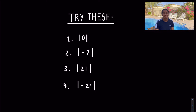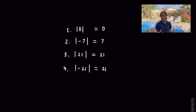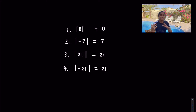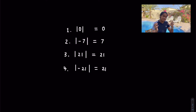Pause the video and try these practice questions using what we've learned. Now let's do them together. The first one is the modulus of 0 — if it's 0, it remains 0. Number 2: we spot a negative number, and the modulus function makes it positive. So the modulus of negative 7 is 7 — we just remove the negative sign and it becomes positive 7.